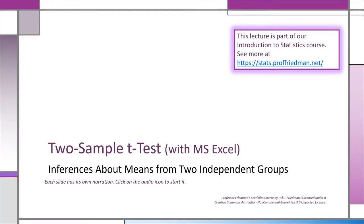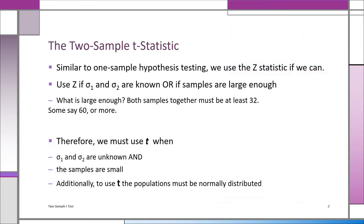Welcome to our lecture about the two-sample t-test. You're going to learn how to make inferences about means from two separate populations. We've already learned to use the z statistic for inferences about means of two groups. Now we're going to learn to do the same thing with the t statistic.